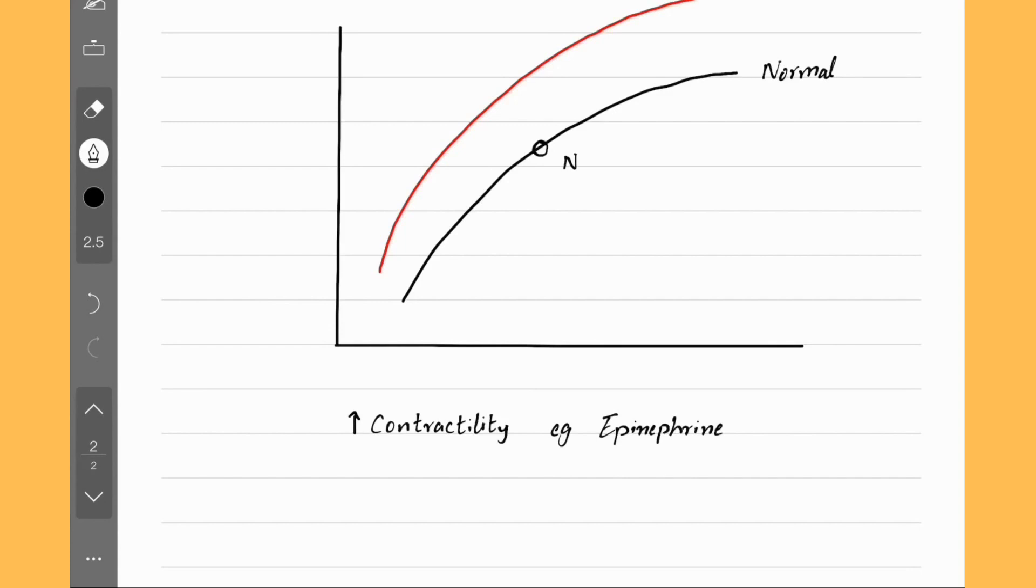The same is also true about decreasing the afterload. When we decrease the afterload, the curve shifts up and the cardiac output increases. We dilate the arteries using hydralazine to reduce the afterload or resistance to blood flow.